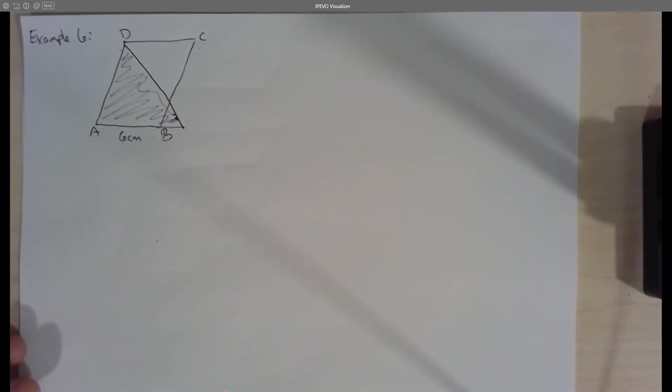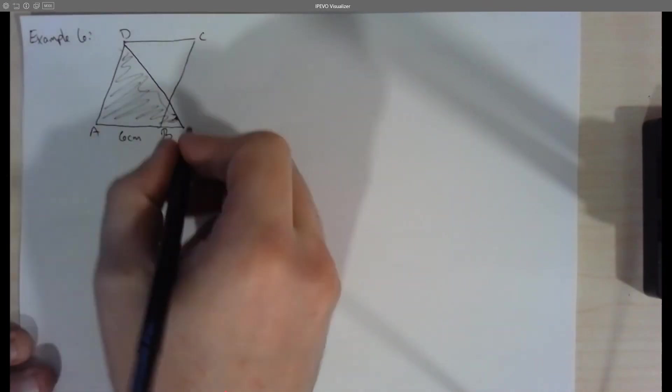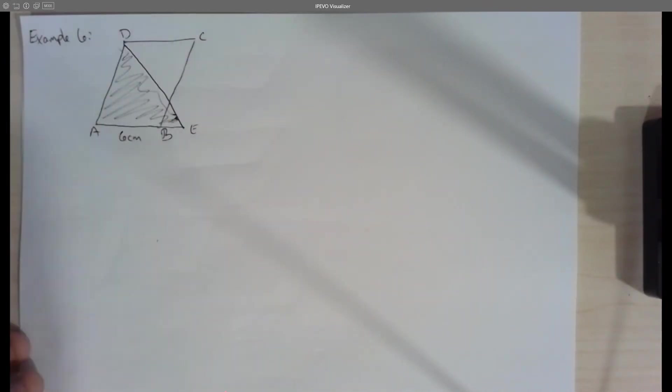It says if the area of A, D, E, this is E over here, so the triangle is three quarters that of the parallelogram, A, B, C, D, find the length of B, E.